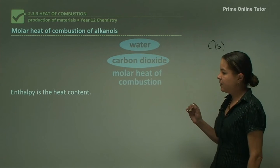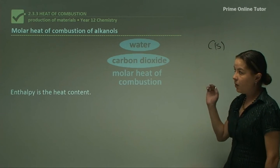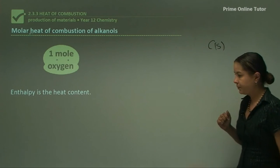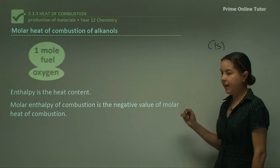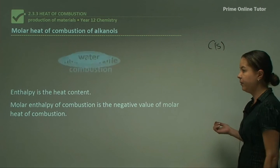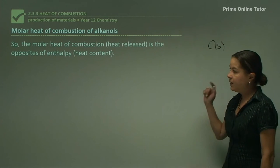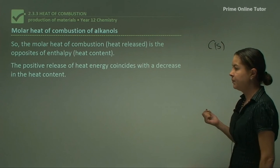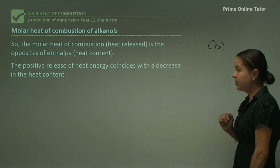Enthalpy is another term we need to look at. Enthalpy is actually the opposite of the molar heat of combustion: the molar heat of combustion is how much energy is produced, whereas enthalpy is the heat content. The molar enthalpy of combustion is the negative value of the molar heat of combustion — they have the same value but opposite signs. So the positive release of heat energy coincides with a decrease in heat content because of this relationship between the two.